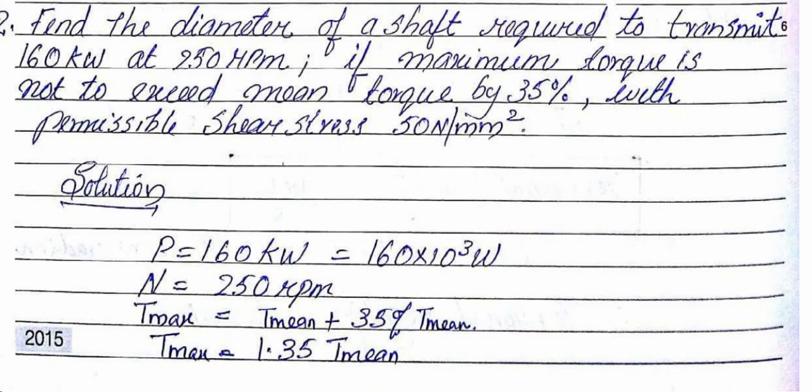Second question: Find the diameter of a shaft required to transmit 160 kilowatts at 250 rpm, if the maximum torque is not to exceed mean torque by 35%, with permissible shear stress of 50 N/mm². Power is 160 kilowatts, which converts to 160×10^3 watts. The number of revolutions per minute is 250.